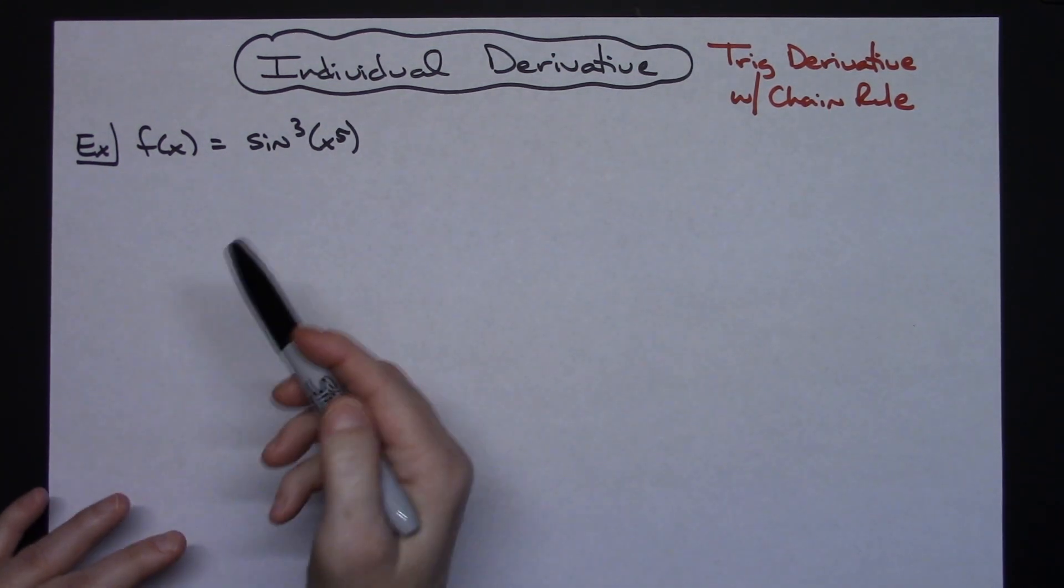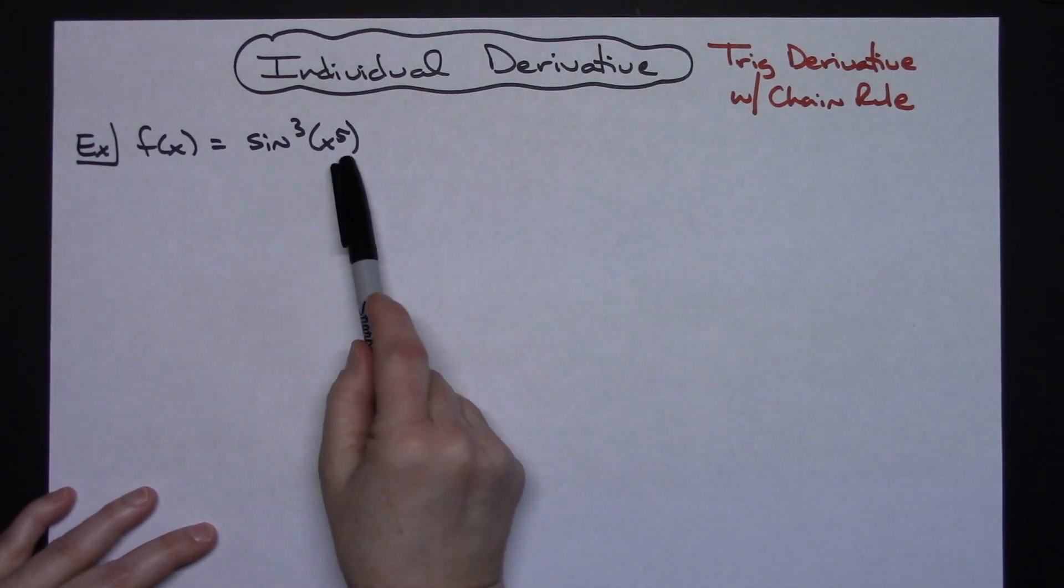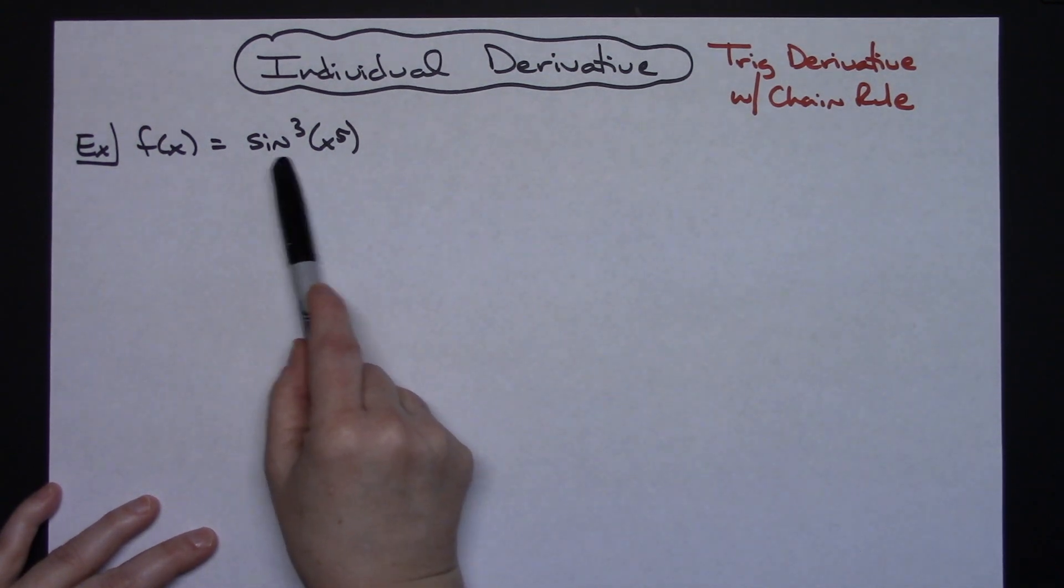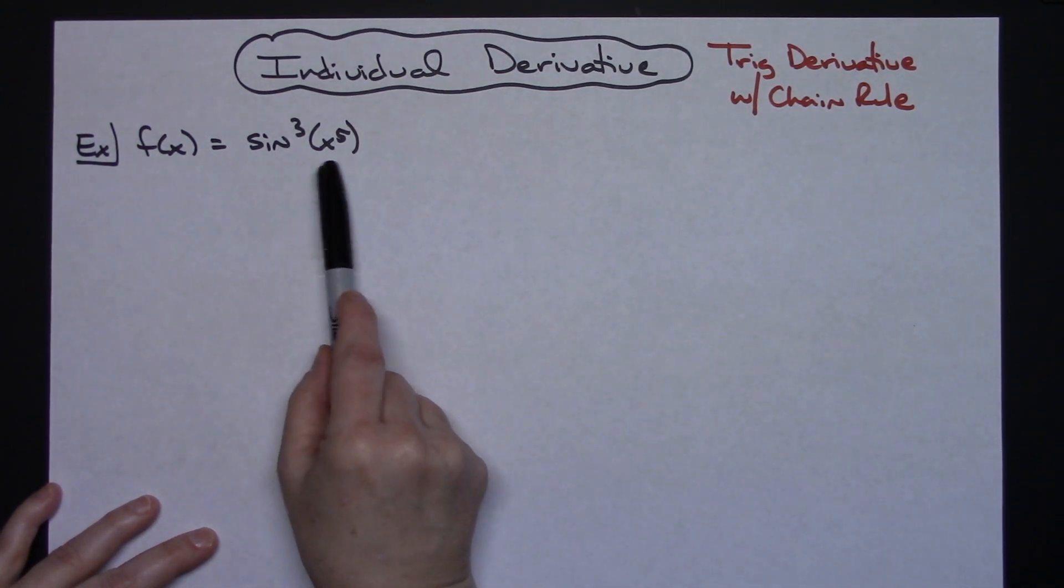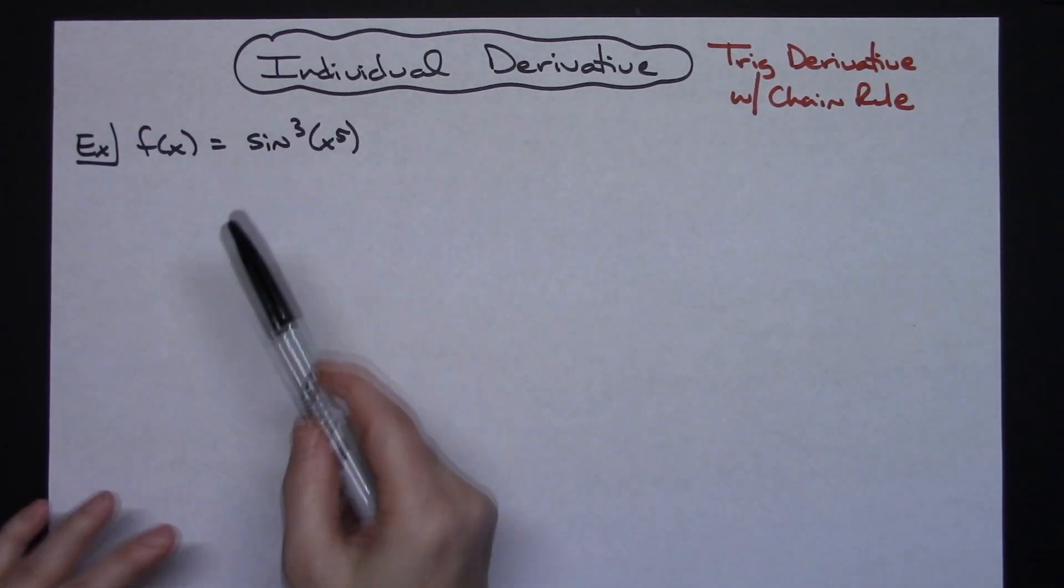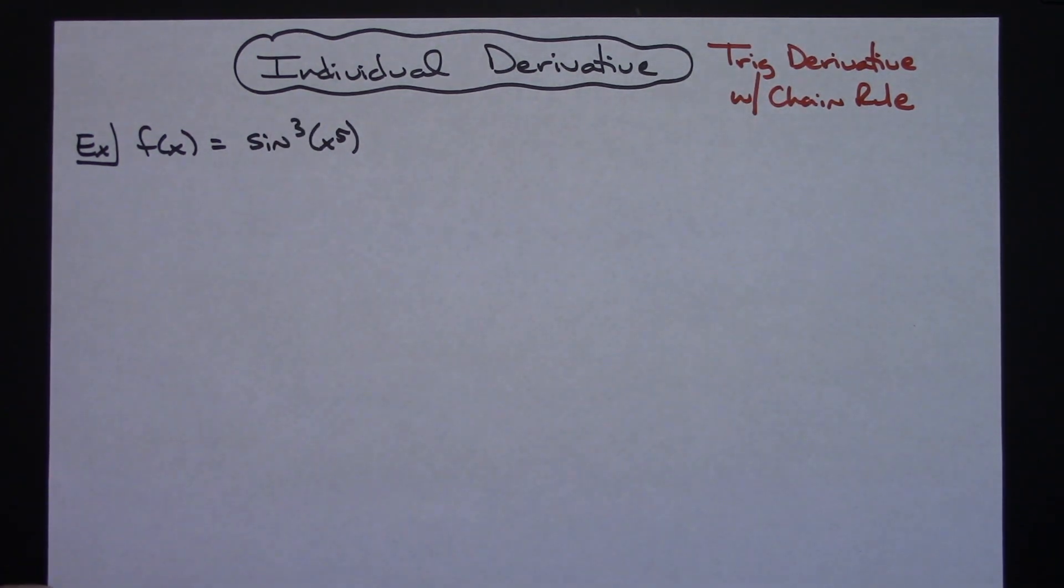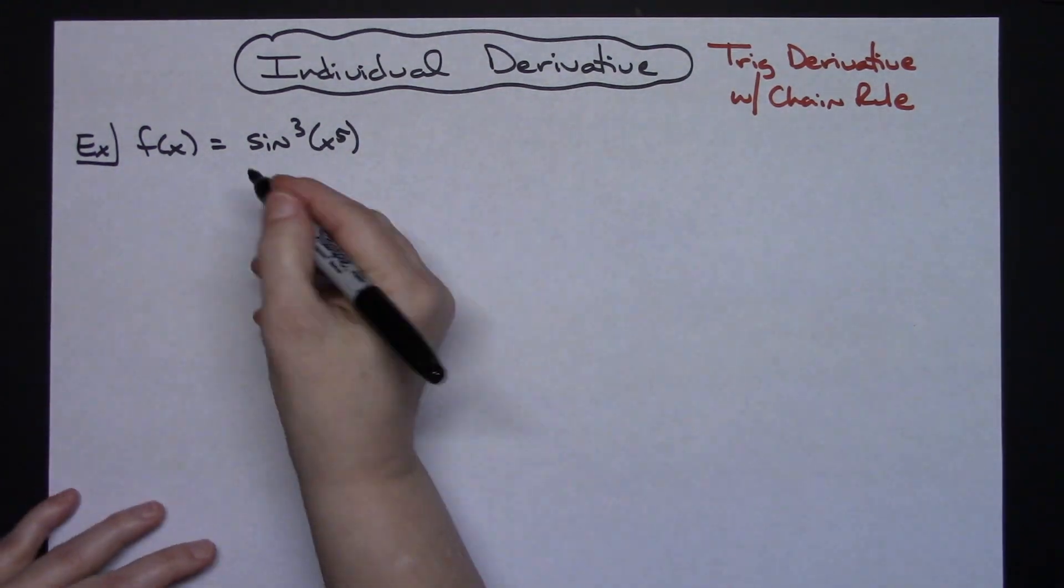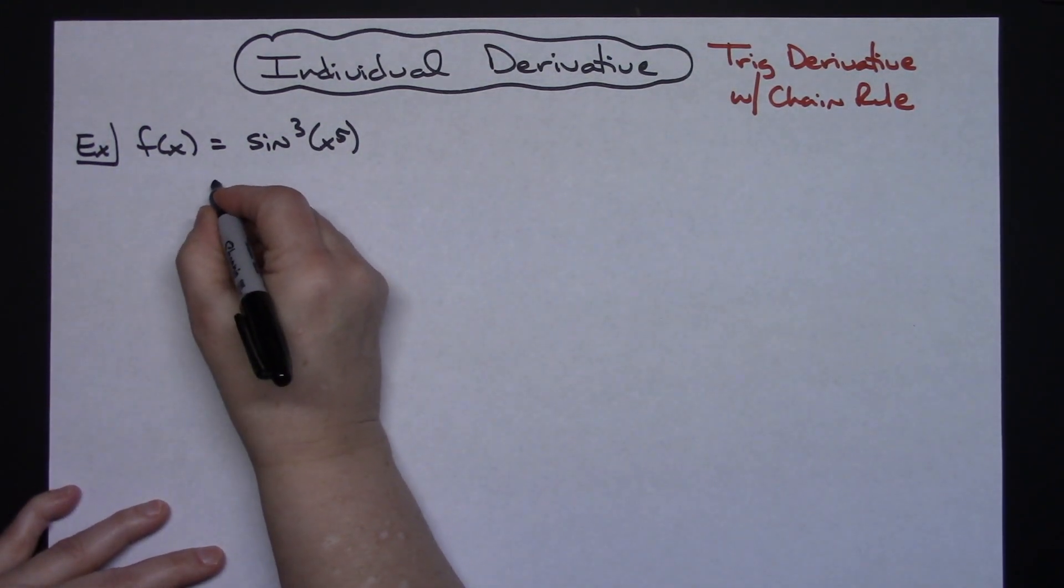So for starters I'm going to take a look at this expression and see if I can algebraically simplify it in any way. Hopefully you are able to see that this is really the sine of x to the fifth raised to the third power. A lot of times they put that 3 right there and for us to do the derivative it's going to help if we see it written differently algebraically.